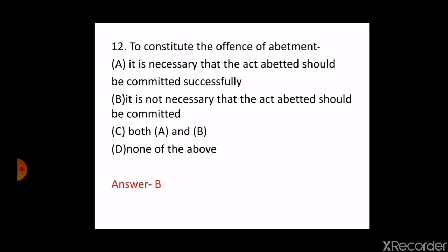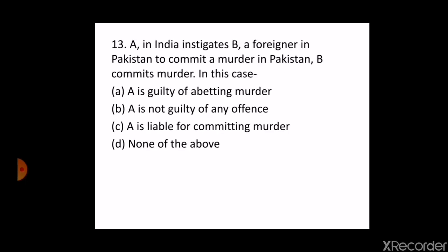The next question is: A, in India, instigates B, a foreigner in Pakistan, to commit a murder in Pakistan. B commits the murder. In this case, A is guilty of — A. Abatment of murder, B. A is not guilty of any offence, C. A is liable for committing murder, D. None of the above. The correct answer is A — A is guilty of abatment of murder. This was asked in the UPPCJ examination in 2003.